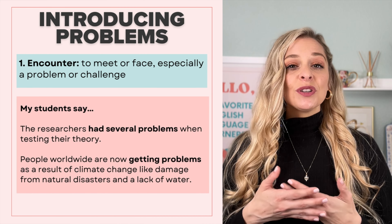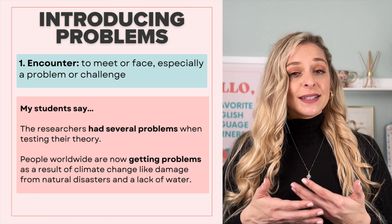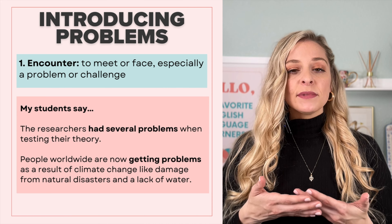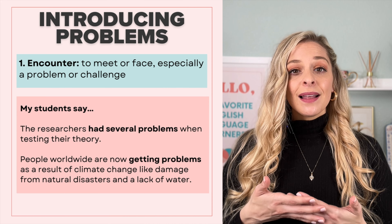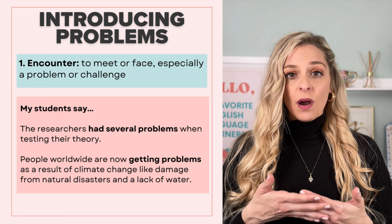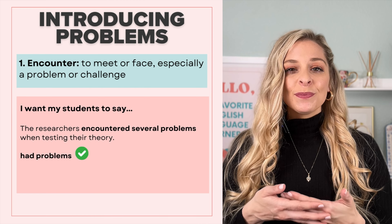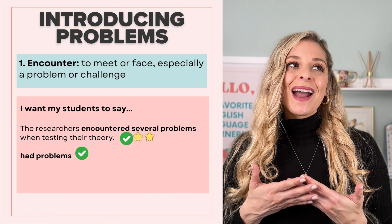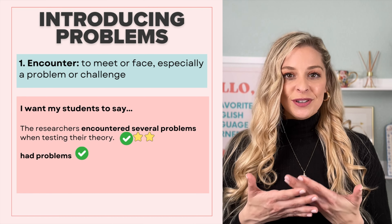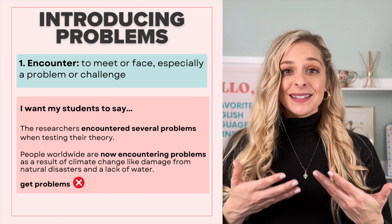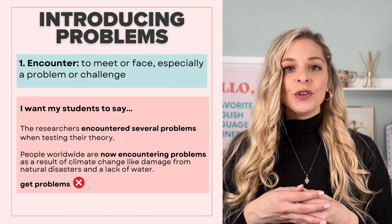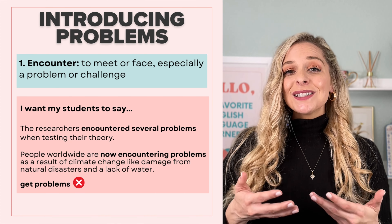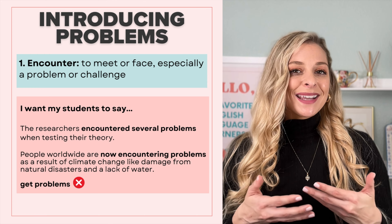Oftentimes my students will say things like: 'The researchers had several problems when testing their theory,' or 'People worldwide are getting problems as a result of climate change, like damage from natural disasters and a lack of water.' Now in the first example, it's okay to say that the researchers had several problems, but you sound so much more academic and descriptive when you say encountered several problems. And in the second example, we actually don't really say 'get a problem,' so it would be so much better to say are now encountering problems.